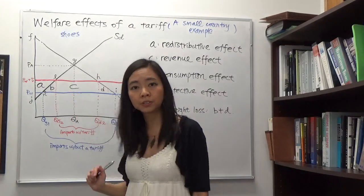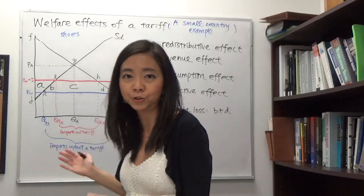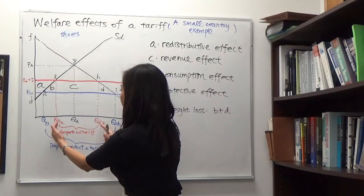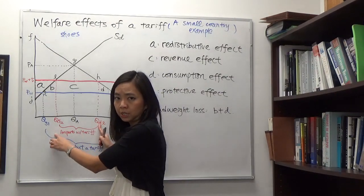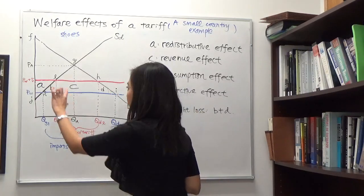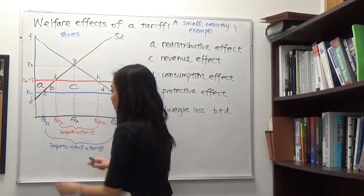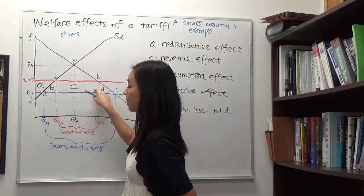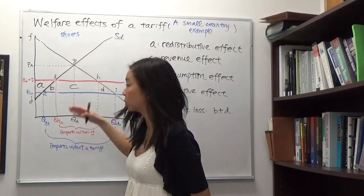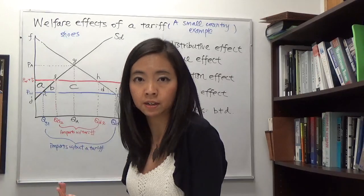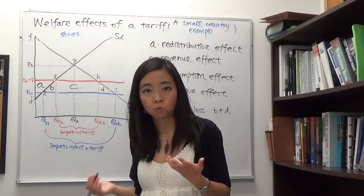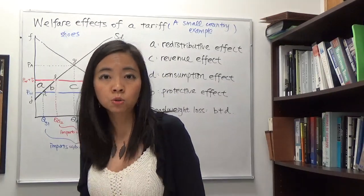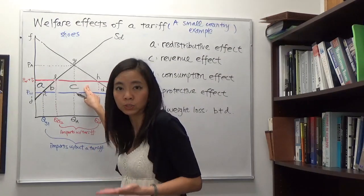How about area C? If you look closely, you will notice that it is actually the government's tariff revenue. After we impose the tariff, our imports become QD2 minus QS2, and for each unit imported you have to pay T dollars to the government. That is exactly T times imports — that is area C. This is paid to the government, and it is not lost because assuming the government is not corrupt, it will use this tax money to build bridges or pave roads.